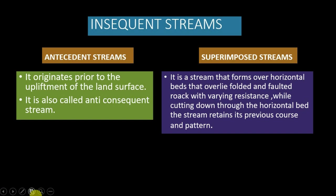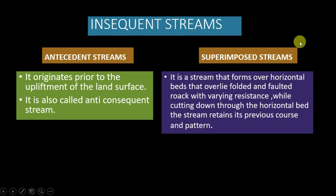Now let's talk about insequent streams. Sequent streams follow a regional slope, but when it comes to insequent streams, they do not follow the regional slope — it is the exact opposite of sequent streams. Antecedent and superimposed streams are the best representative examples of the insequent drainage system.